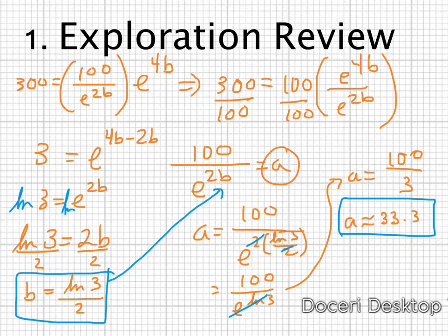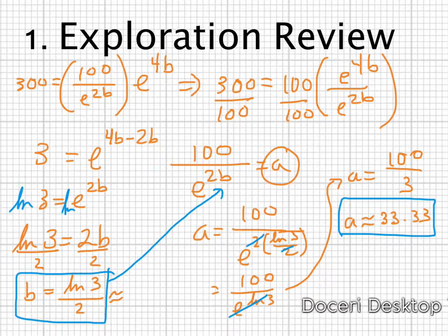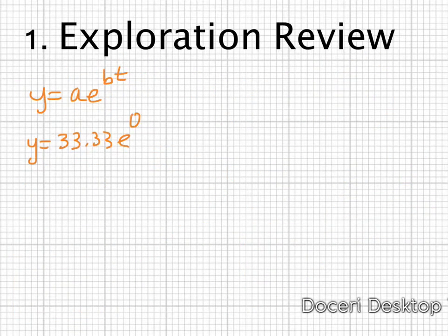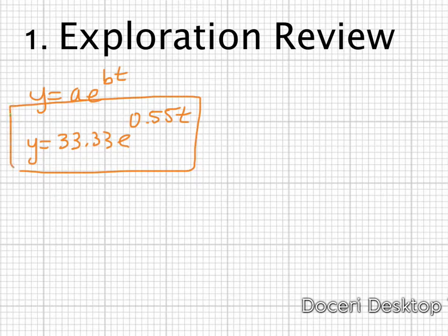Now that I have a and b, I can rewrite the equation. I'll approximate: a is 33.33. For b, I calculate the natural log of 3 divided by 2, which is approximately 0.55. Copying those values into our equation y equals a e to the bt, the new equation is y equals 33.33 e to the 0.55t. That's the equation that models the number of flies.